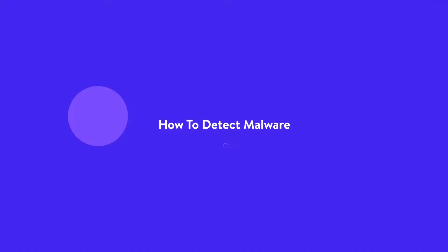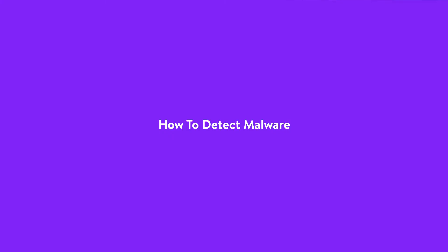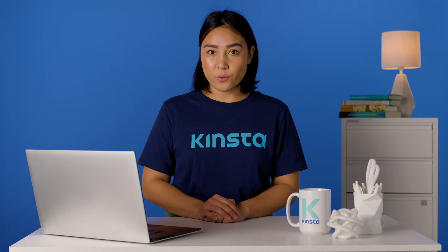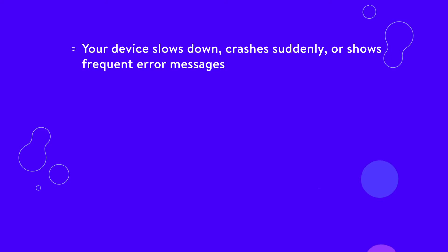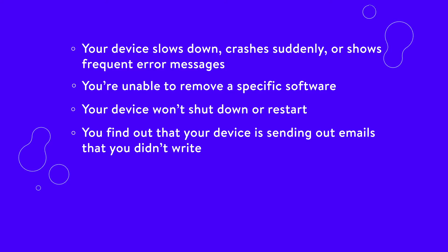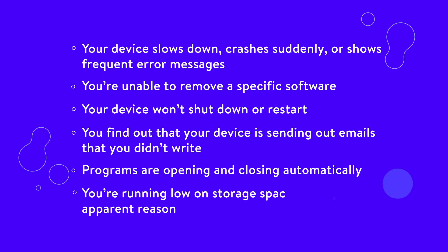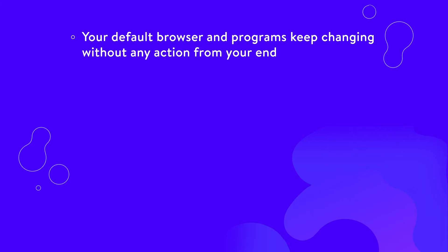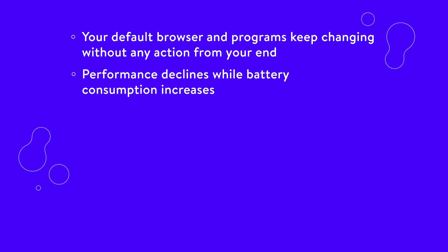Here are some key warning signs that can help tell if your device is infected with malware. Your device slows down, crashes suddenly, or shows frequent error messages. You're unable to remove a specific software. Your device won't shut down or restart. You find out that your device is sending out emails that you didn't write. Programs are opening and closing automatically. You're running low on storage space for no apparent reason. Your default browser and programs keep changing without any action from your end. Performance declines while battery consumption increases. You see lots of pop-ups and ads in unexpected places, such as on government websites.